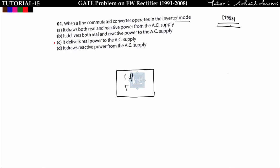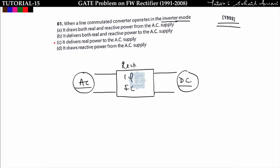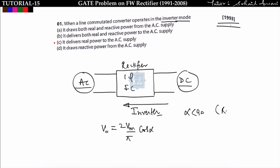In a rectifier, AC input is converted to DC output. When DC power is fed back to the supply — i.e., DC is converted to AC — that mode is called inverter mode. The output voltage is 2Vm/π × cos α. If α < 90°, output voltage is positive (rectifier mode); if α > 90°, output voltage is negative (inverter mode).